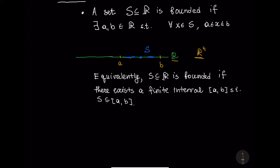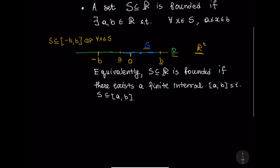Suppose zero is positioned here. If I'm dealing with a set S bounded by two numbers A and B positioned in this way, I can easily say that the set is contained in the interval from negative B to B. This is equivalent to saying that for every x in S, the distance from that element x to zero is going to be less than B. The distance from x to zero is the absolute value of x, and it is going to be less than B.